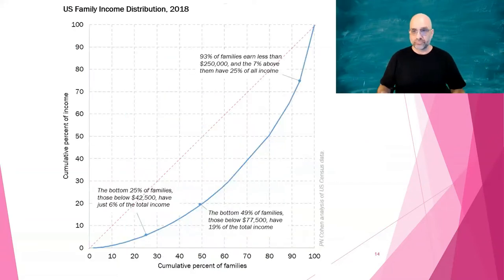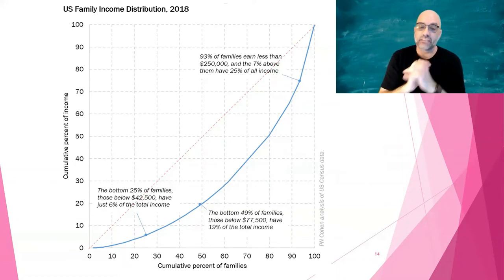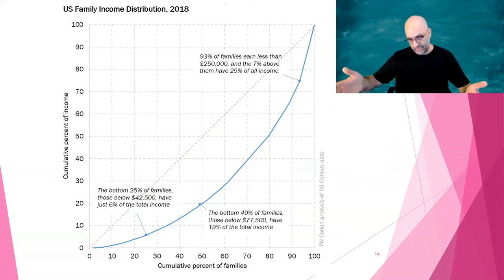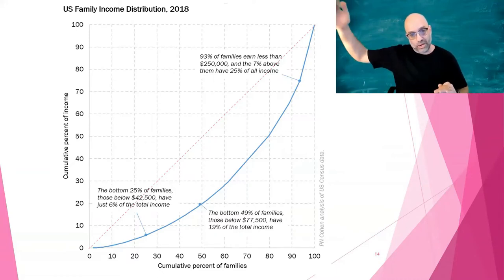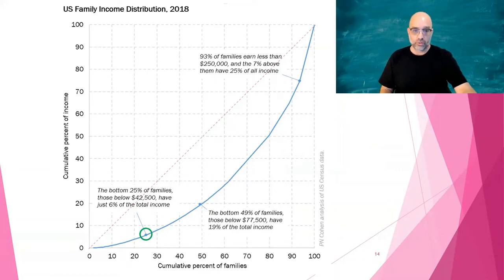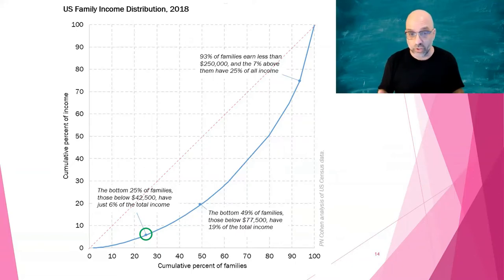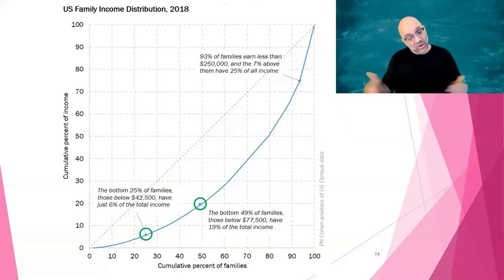Now let's look at the United States. The Census Bureau asks a large random sample of people how much money their family makes, then lines them up from poorest to richest and we see how far that curve bends from the slope of equality. For example, the bottom 25% of families — those with incomes below $42,500 — only have about 6% of total income. And the bottom 49% of families, those below $77,500, together only have 19% of the income.